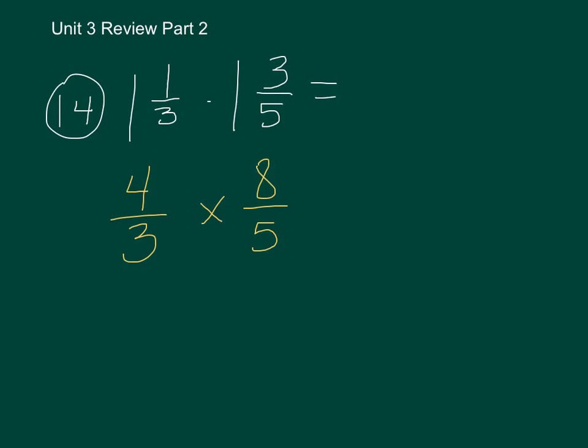Now, bad news, I cannot do any kind of cross-simplification. 8 and 3, no common factors but 1. 4 and 5, no common factors but 1. So from here, I'm just going to have to do some straight-up multiplication. 8 times 4 is 32. And 5 times 3 is 15.